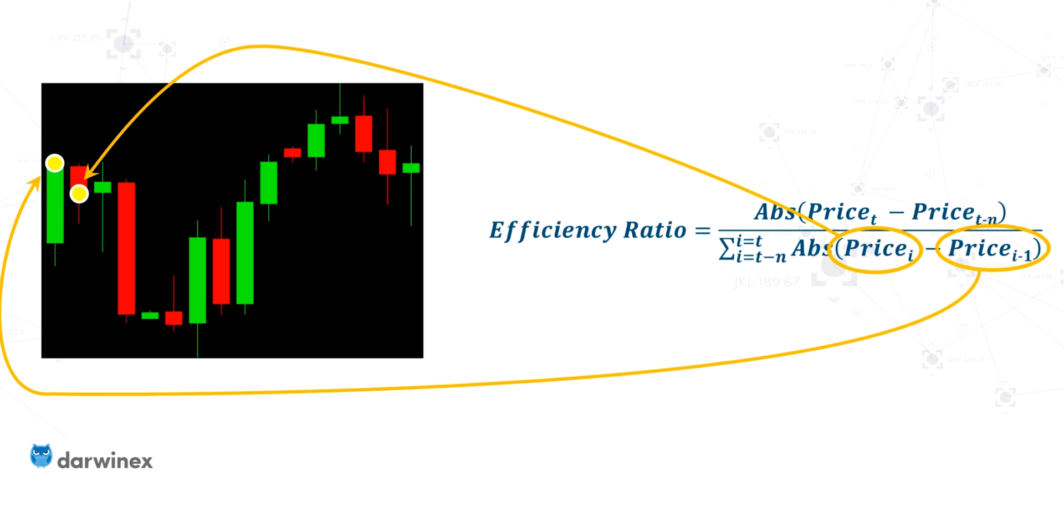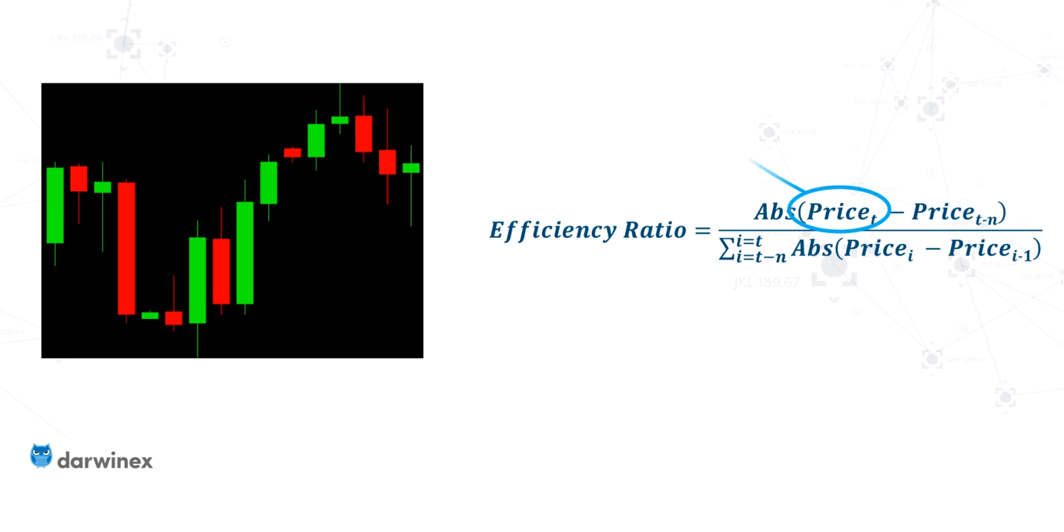Now, another difference is that where price density uses the range between the highest high and the lowest low, the efficiency ratio looks at the absolute change in the price. So it takes the final price in the period, subtracts the initial close price in the period. And it's this difference that gives an idea of what the meaningful price move is.